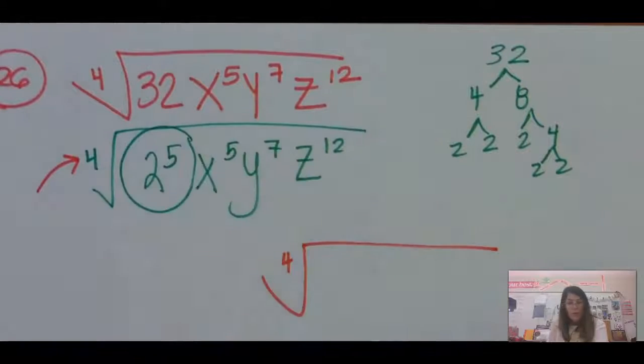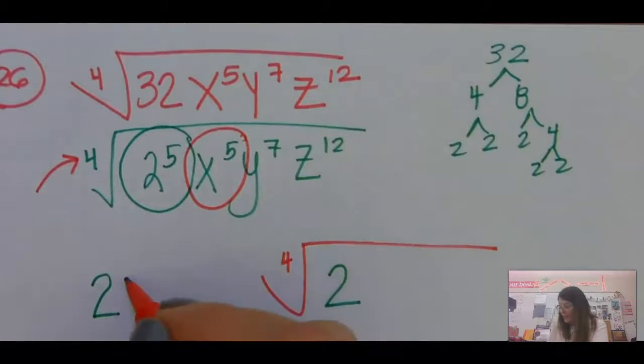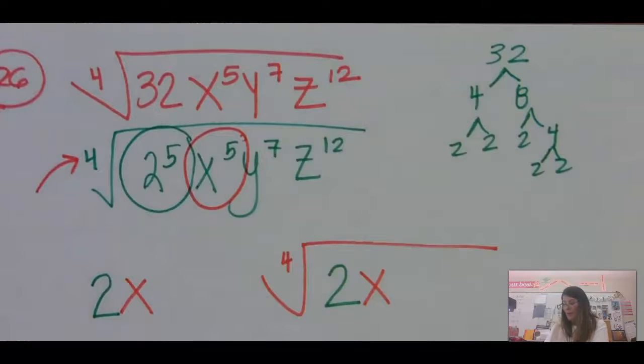So 2 to the 5th. Four of them work together to come out, and there's one left on the inside. Same with the x's. When there's five of something, four of them work together and come out. One is still trapped inside.